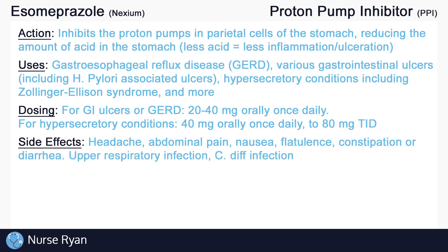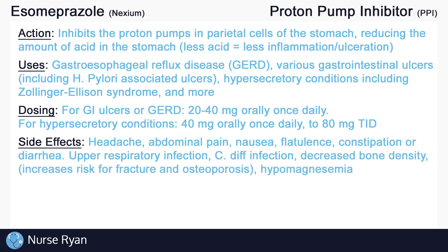Some of the less common side effects include upper respiratory infection, especially in children, and C. diff infection. These side effects are thought to be caused by increased bacterial colonization of the stomach as a result of decreased stomach acidity. Another less common side effect is decreased bone density, also thought to be caused by decreased stomach acidity leading to malabsorption of vitamins and minerals. Lower bone density increases the risk for fracture and osteoporosis. Hypomagnesemia is also a potential side effect of PPIs.